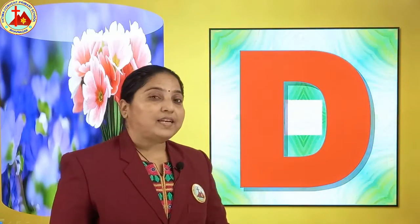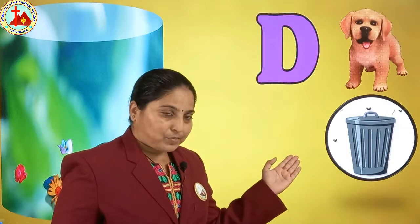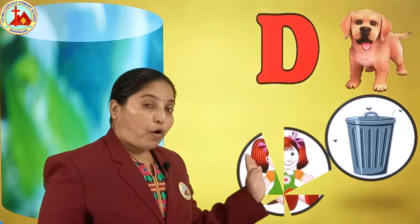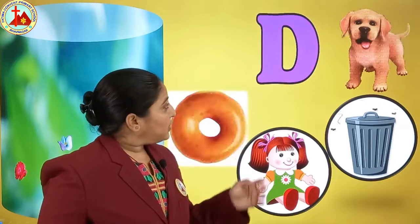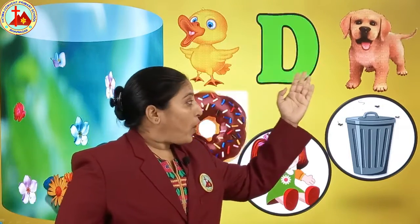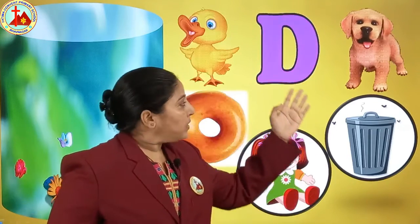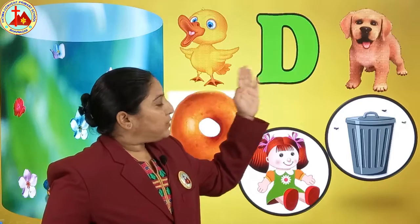Now the next one is D. Let's see the pictures related to letter D. D for dog, D for dustbin, D for doll, D for donut, and D for duck.